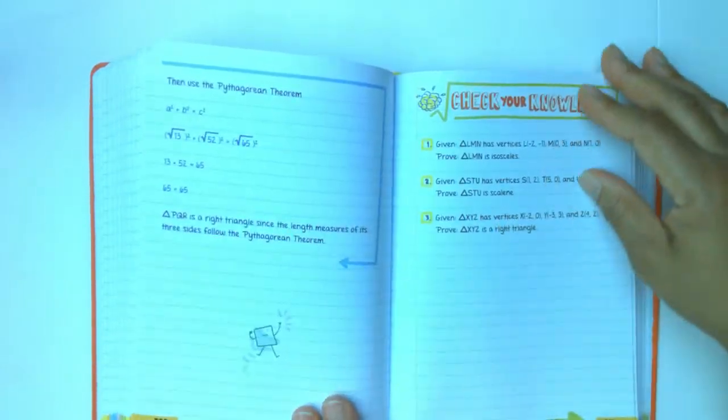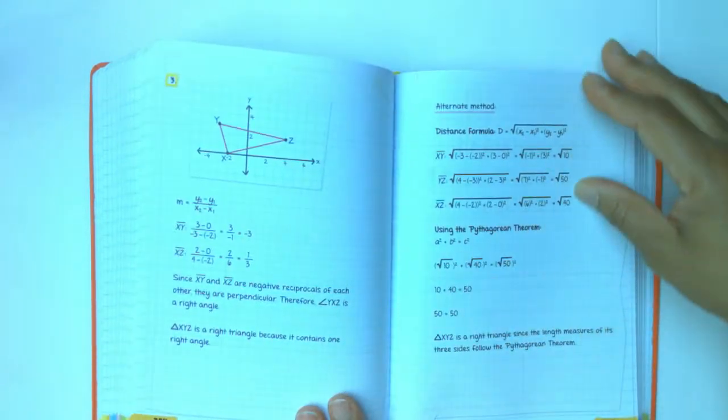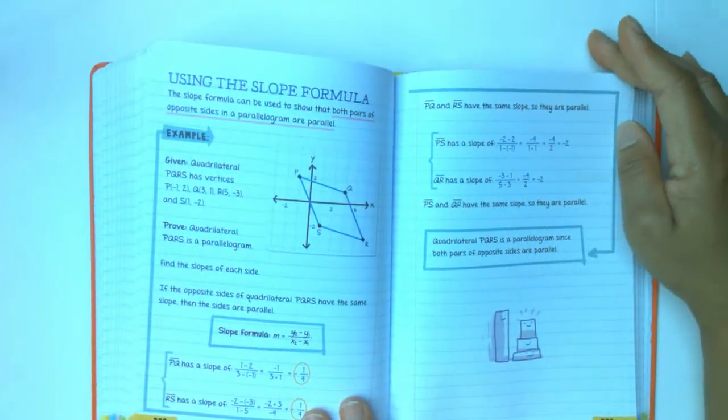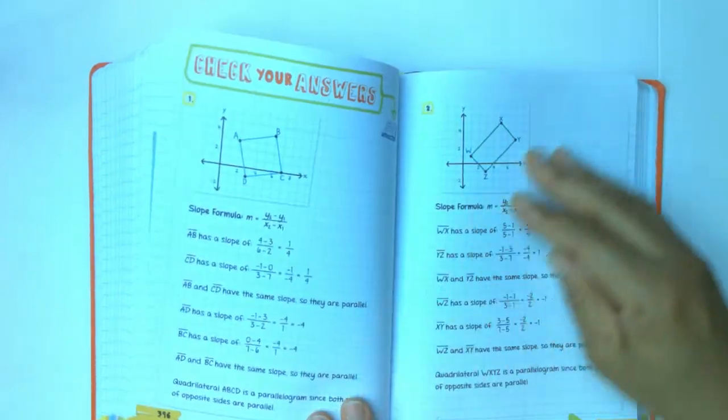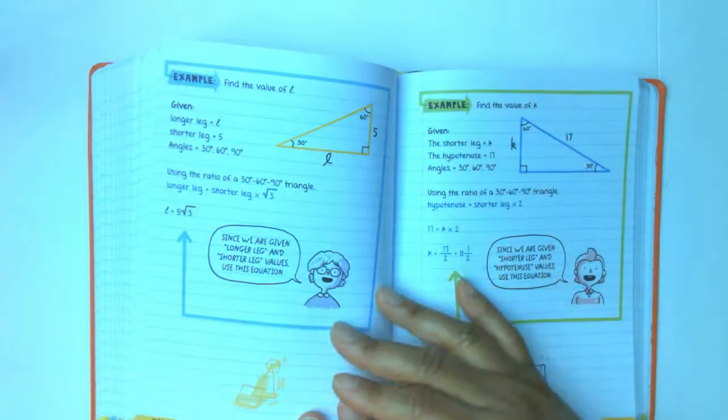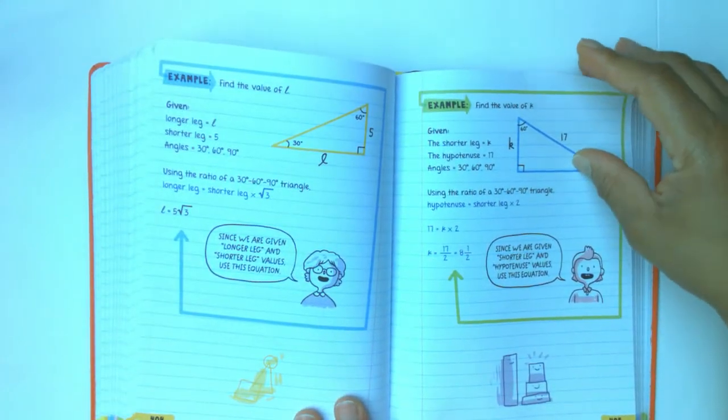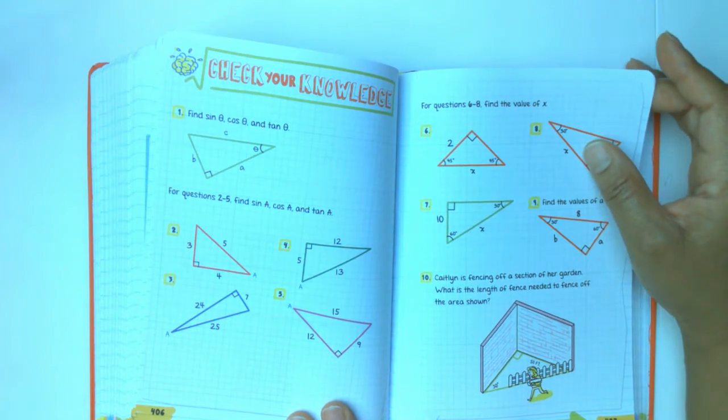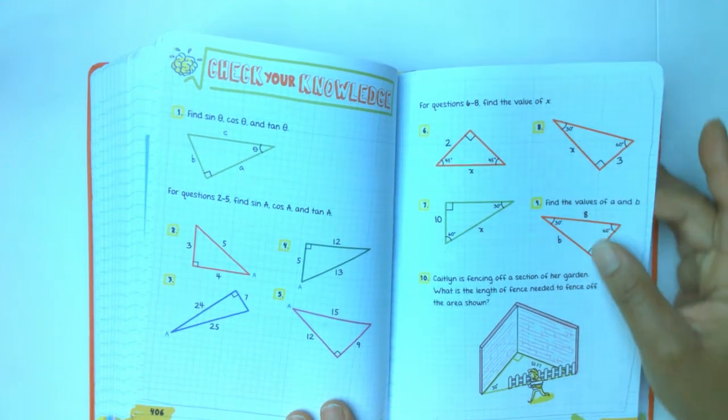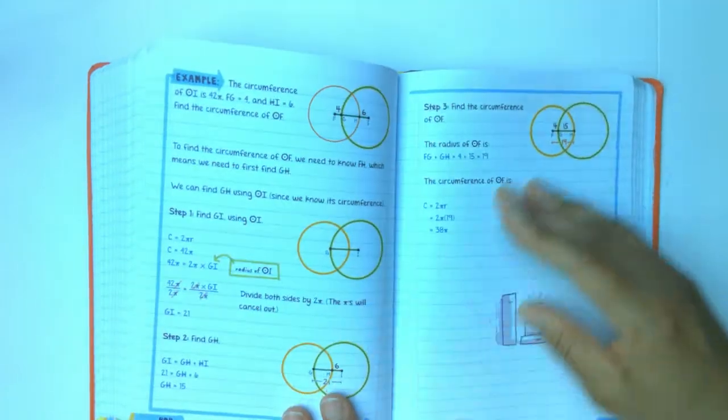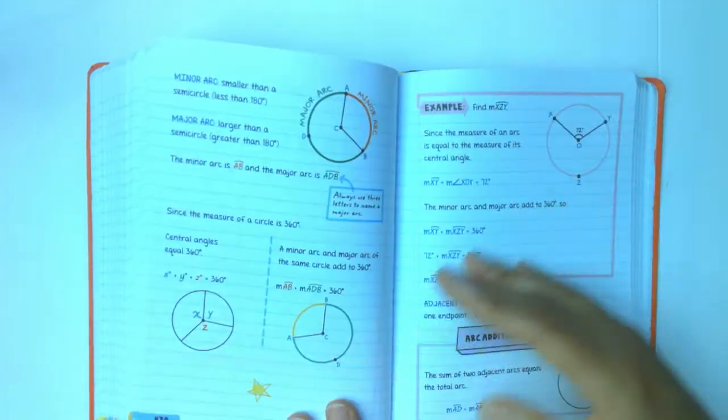This would do well with any curriculum. That means Life of Fred, Math-U-See, SATs and Math. Macmillan. Let me think of some others—Teaching Textbooks.